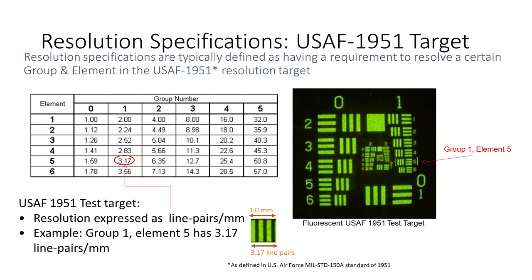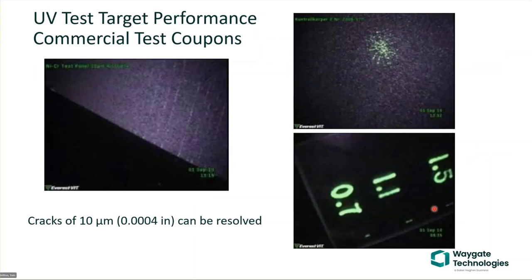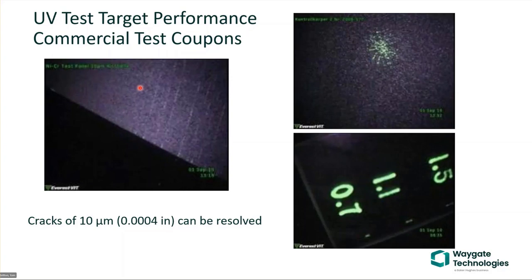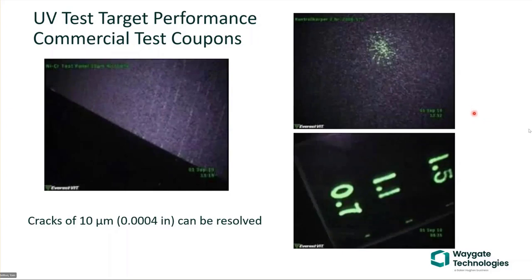There are also a number of commercial test coupons available. Many FPI processes require an inspector to validate that their fluorescing material is still capable of fluorescing properly — as material ages, it doesn't fluoresce as well as when new. Here's one with a series of cracks: you spray it on, prepare it properly, and then verify you can see the indications. This particular coupon has epoxy-impregnated fluorescing material with spots at 0.7mm, 1.1mm, and 1.5mm defect sizes. Search for FPI test targets or test coupons on the web to find them commercially.